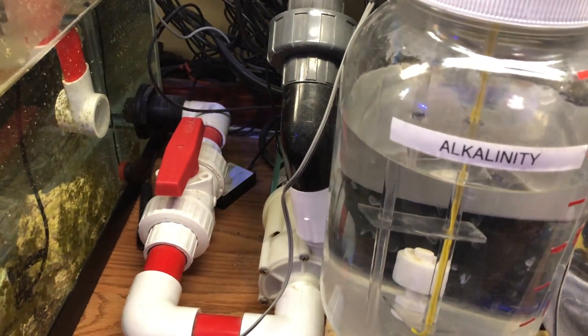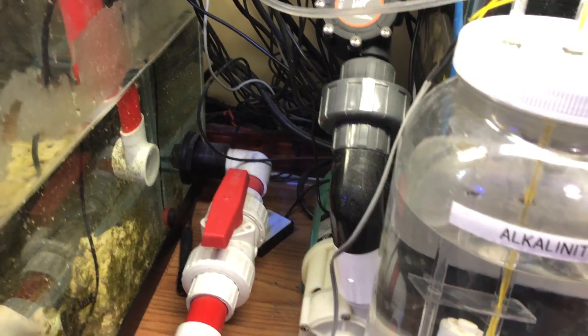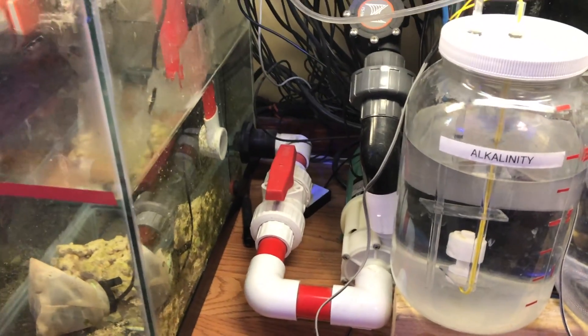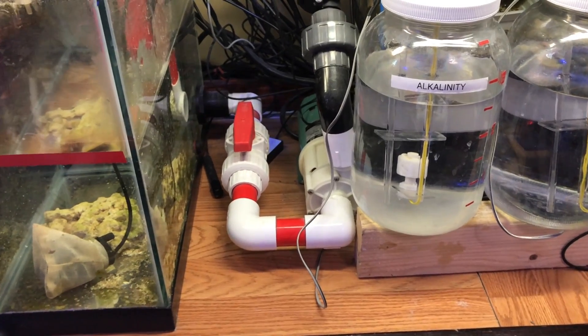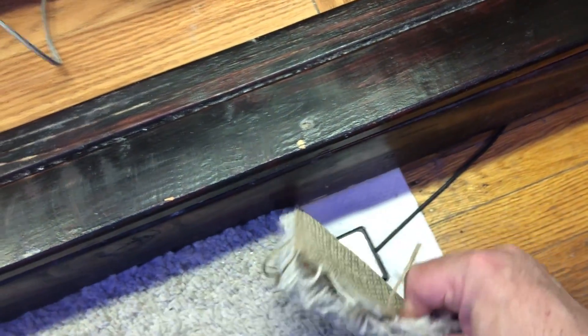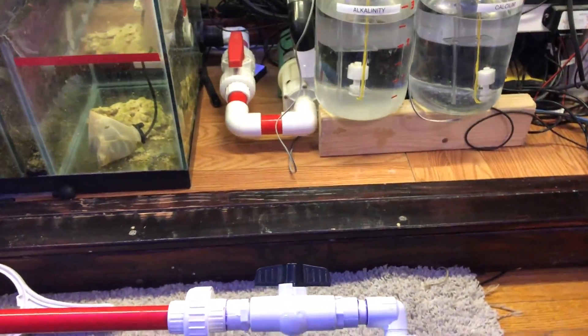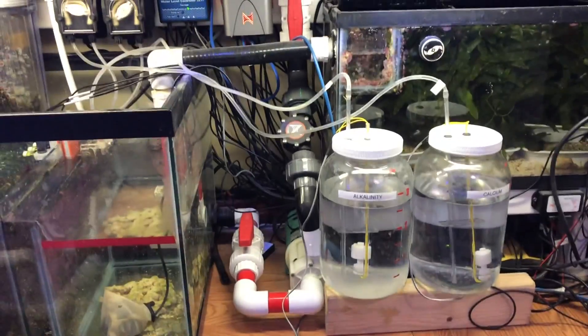Two of the other things hooked up to that are the leak detectors. I've got one of the leak detectors right where my outlet is for my return pump, because I have an external return pump. If anything starts leaking, it'll probably start leaking right there. I've also got a leak detector out here in front of the cabinet under the carpet. If any water were to escape the cabinet and start leaking on the carpet, it'll hit that sensor and I'll get a notification.